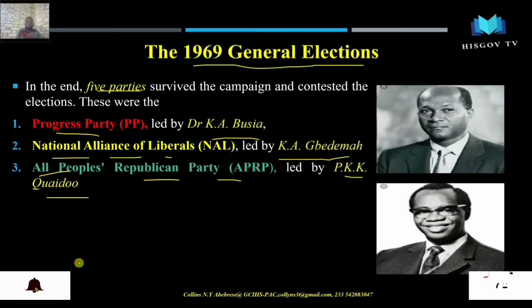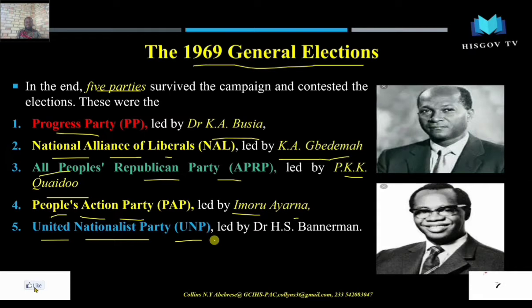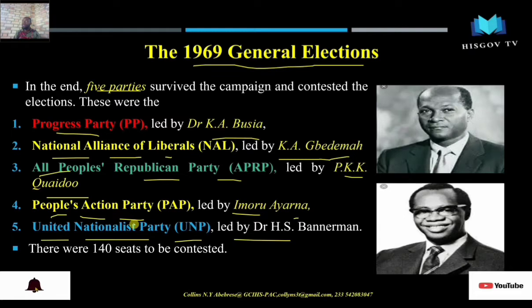We also had the People's Action Party, the PAP, led by Imoro Ayrana, and the United Nationalist Party, the UNP, led by Dr. H.S. Bannerman, who was actually a medical doctor. These were the five parties that contested the 1969 election, with 140 seats to be contested among them.